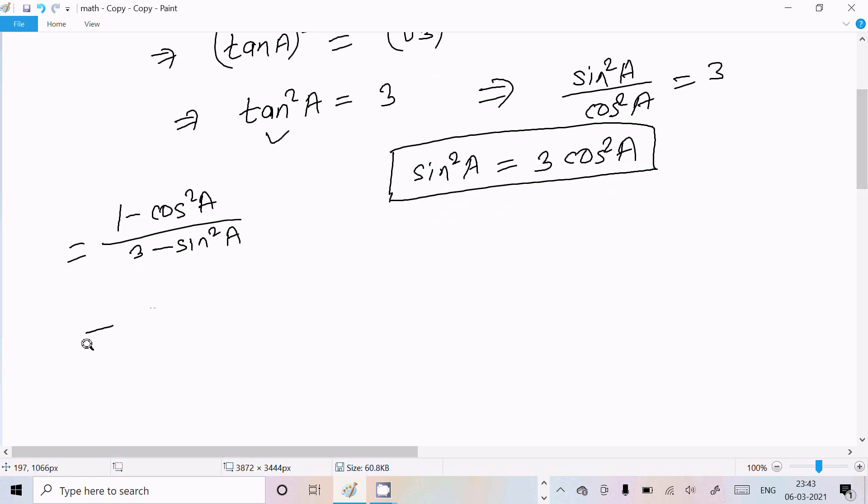For sin²A we can write 3cos²A. So in place of sin²A we can write 3cos²A in the denominator.